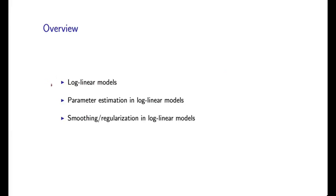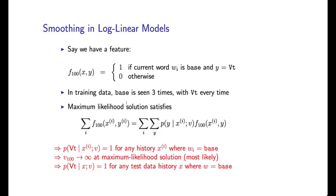We've now described the basic form of log-linear models and talked about parameter estimation in these models. The final piece of the puzzle is going to be smoothing and regularization, which is a slight but very important modification to the parameter estimation methods just described. Let's look at a particular problem with the maximum likelihood estimates by examining a specific example.